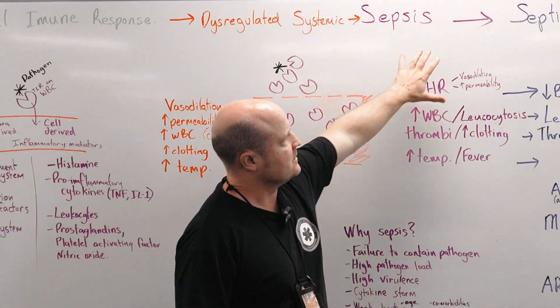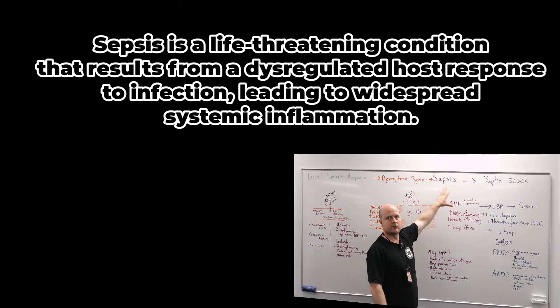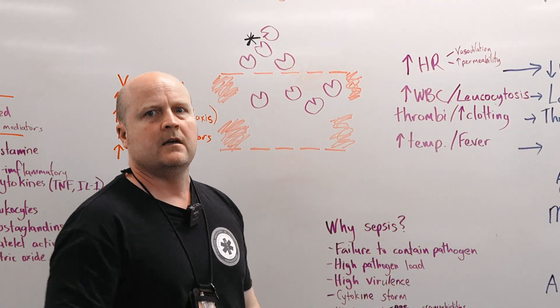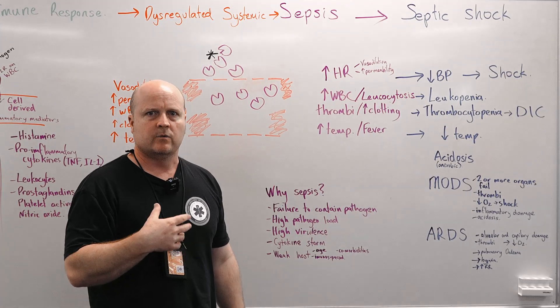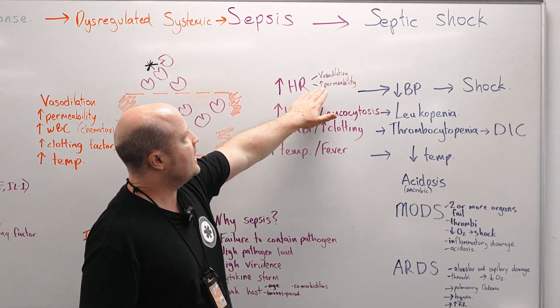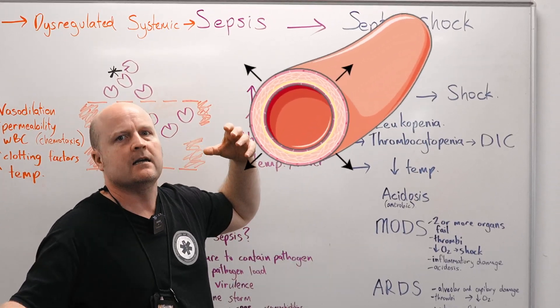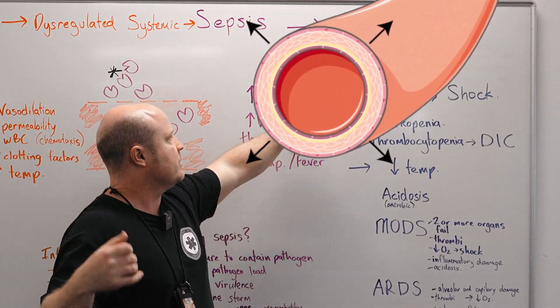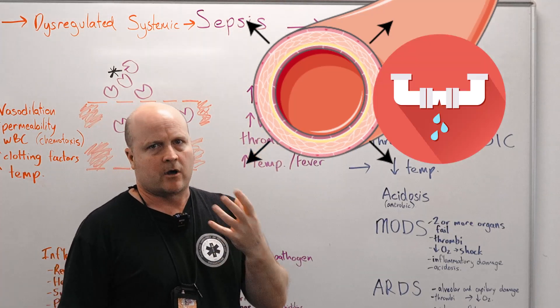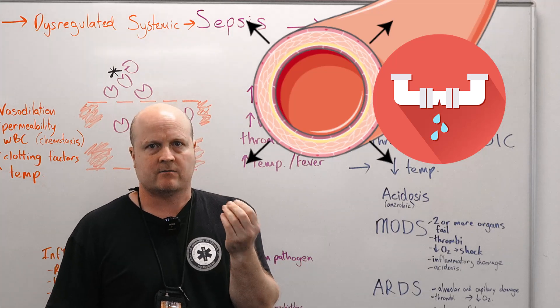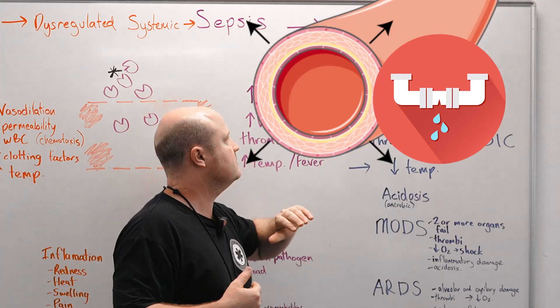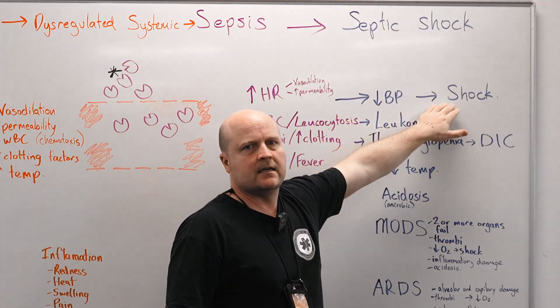So this is sepsis, a dysregulated host response. And then as it progresses and it deteriorates, we're going to progress towards septic shock. Okay. So as we continue vasodilating and as we continue with our increased permeability, eventually our heart's not going to be able to compensate by increasing heart rate and now our blood pressure is going to start to drop. And that's when we start to get into shock.